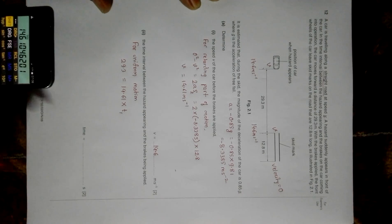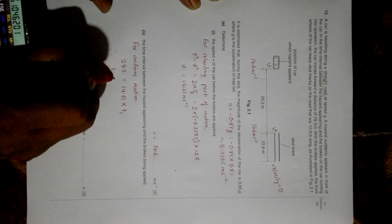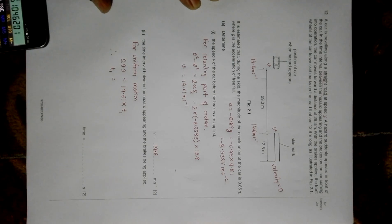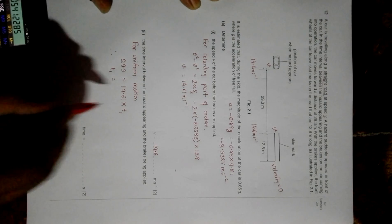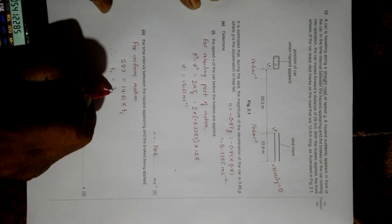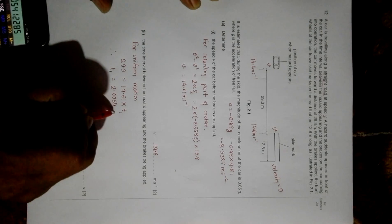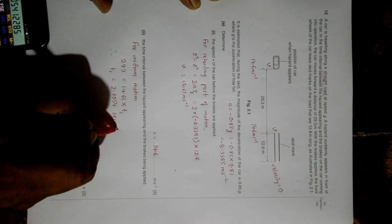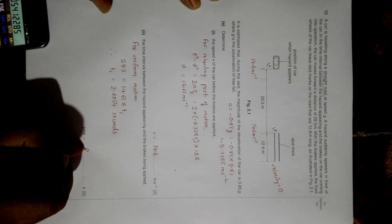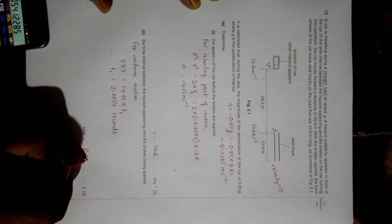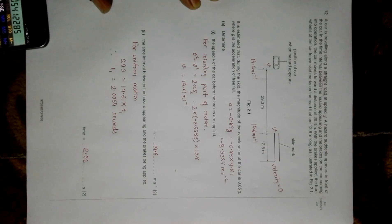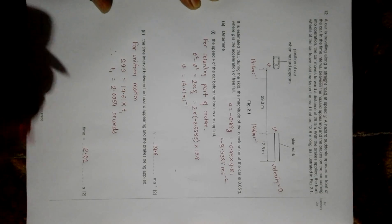This gives me t1 is equal to 9.3 divided by 14.61, which equals 2.0054 seconds. I can simply write it as 2.001 seconds. So this is the time.